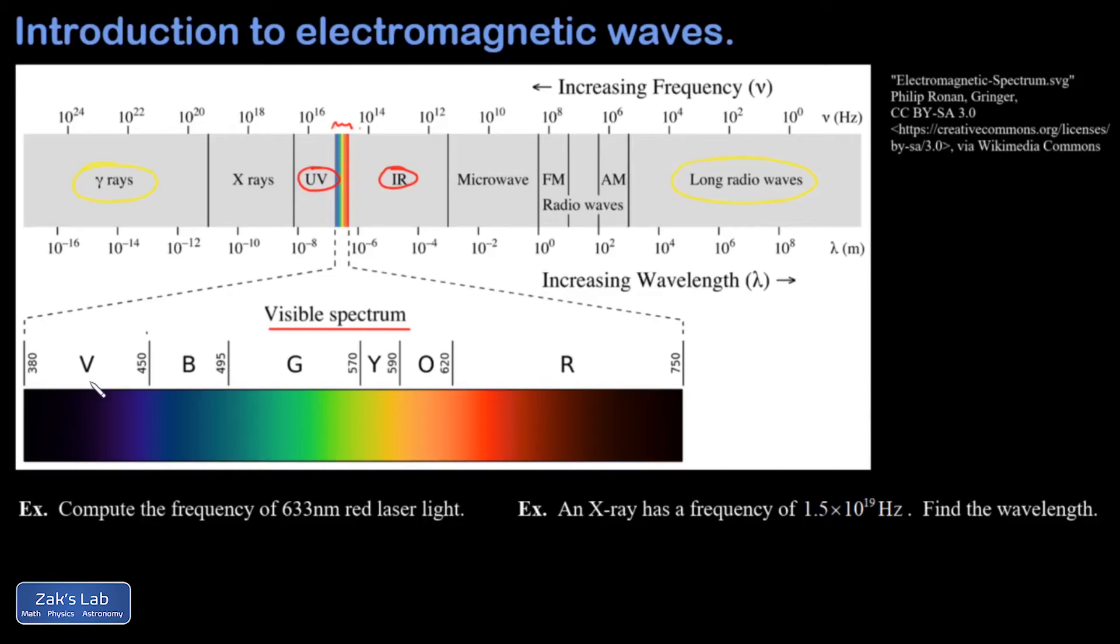And so all the different colors that we see correspond to just different wavelengths of light in this narrow band. Shortest wavelengths are violet, longest wavelengths are red. And you may have seen this mnemonic before, but you can remember the order of these things with this mnemonic ROY-G-BIV, which actually orders these things from the longest wavelength all the way to the shortest wavelength: red, orange, yellow, green, blue, indigo, violet.